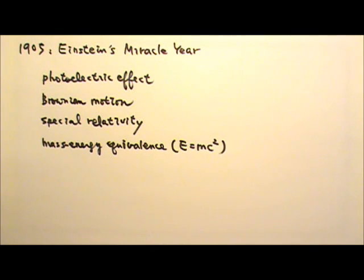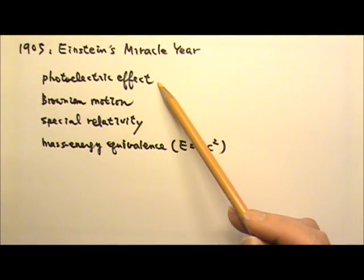The year of 1905 is called Einstein's miracle year. In 1905, as a Swiss patent clerk working on physics in his spare time, Albert Einstein published four landmark papers on photoelectric effect, Brownian motion, special relativity, and mass energy equivalence. In the next few lessons, we will be studying his photoelectric effect.